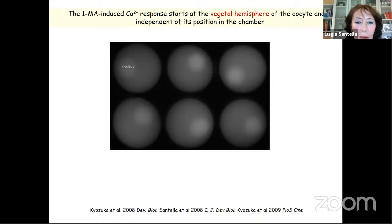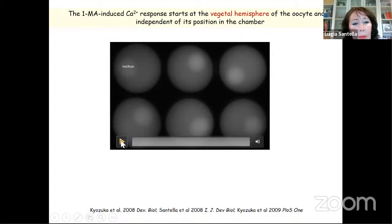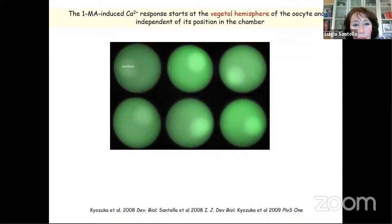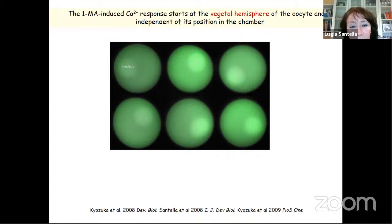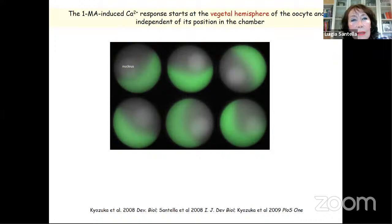With more modern technology, we were able to visualize where calcium comes from. We published a paper confirming in the Japanese and Mediterranean species that there is an elevation of calcium in response to the hormone. More recently, my PhD student Dimitri Lim made this experiment — he measured and observed the calcium increase in starfish oocytes. What he found, which was interesting, is that even when all cells are exposed to the hormone — six oocytes in the chamber, the hormone everywhere in seawater — the calcium wave only starts from one side of the oocytes.